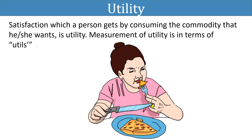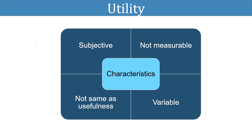We have four characteristics of utility. The first one is that utility is subjective. Utility depends on an individual's own subjective estimate of the amount of satisfaction he or she is likely to get from a commodity.